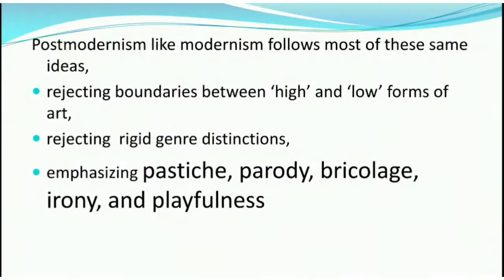Postmodernism, like modernism, follows most of these same ideas, such as rejecting boundaries between high and low forms of art. For example, the high form of art is epic poetry, while a low form is like Ghanaian poetry. In the postmodern age, there is no distinction between high and low art; what matters is how it is presented. It also rejects rigid genre distinctions — poetry can be written in a prose-like manner and prose can be written like poetry. There is an emphasis on pastiche, parody, bricolage, irony, and playfulness.